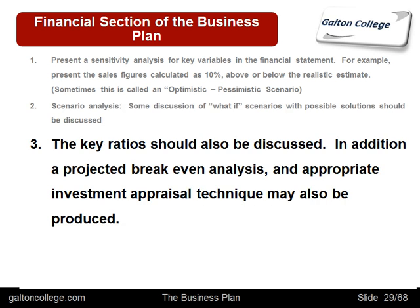Key ratios should also be discussed. Ratio analysis is a part of the course. Ratios mean that large companies and small companies can be compared in terms of efficiency. There are many ratios available — the classes on ratios can list many types. But ratios are a quick way of comparing different sectors, different companies, small and large, and these can be checked and discussed in the context of the business plan.